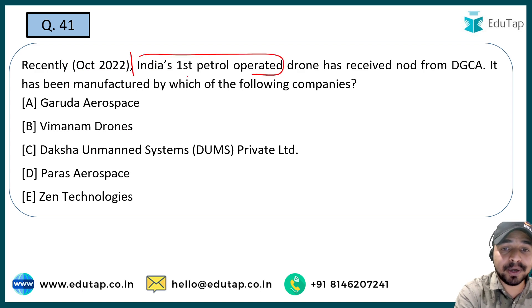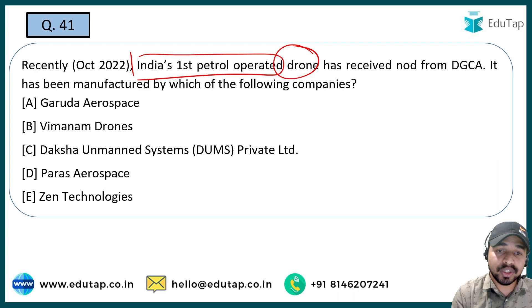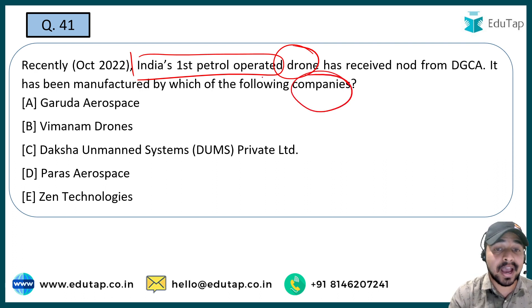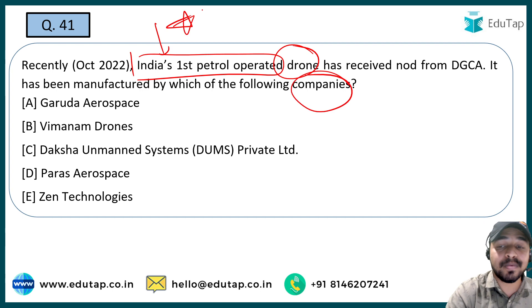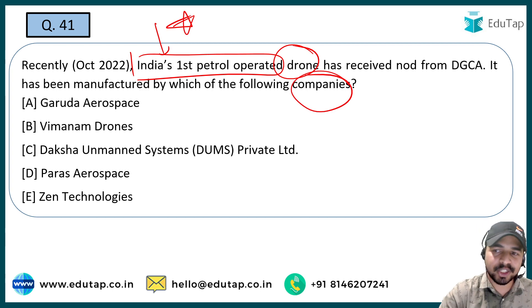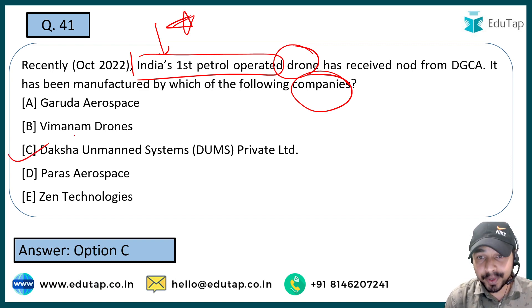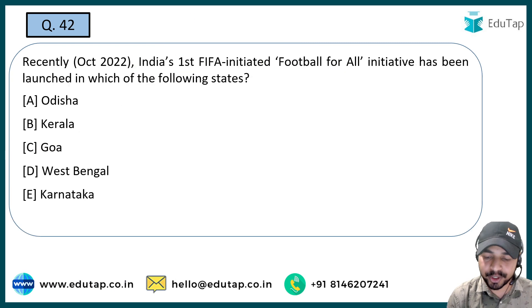The next question: India's first petrol-operated drone — you have to tell its name. It has received NOC from the DGCA. The company that will manufacture it is Daksh Unmanned Systems Private Limited, which is going to launch India's first petrol-operated drone.